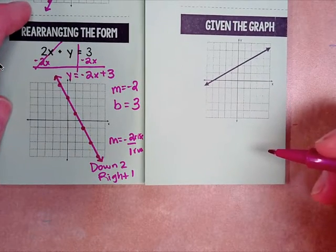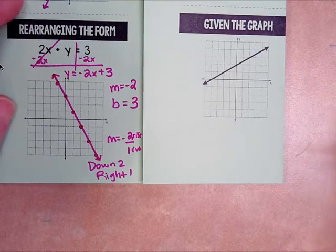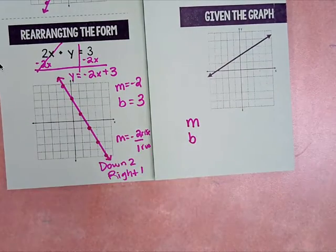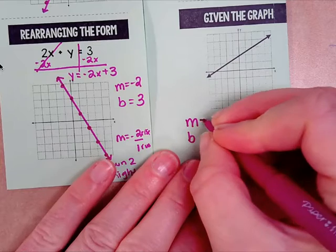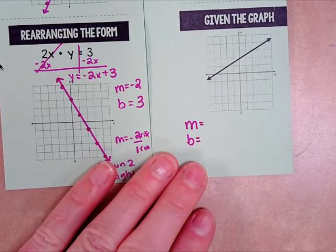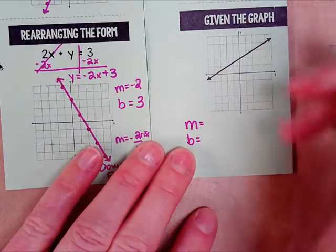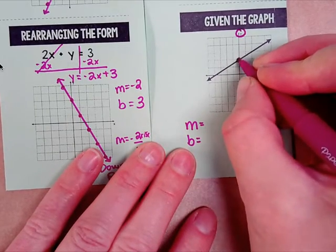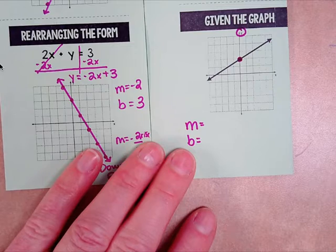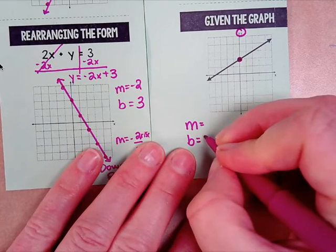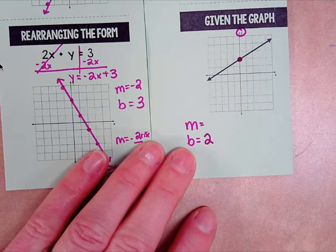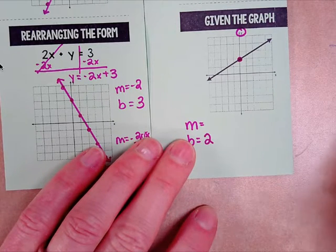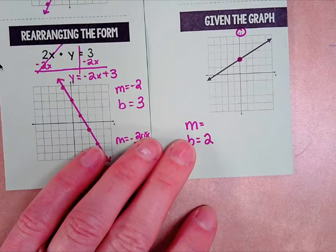The next part: given the graph, we're going to write the equation. We want to find m and b, then write the equation in y equals mx plus b form. Go to where b is — the y-intercept is where the line crosses the y-axis, the one going up and down. The y-intercept here is 2, so write b equals 2.